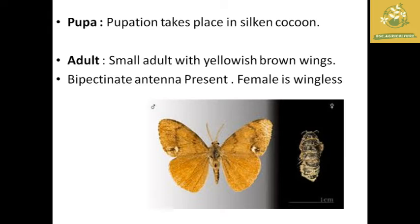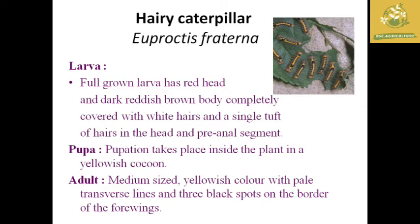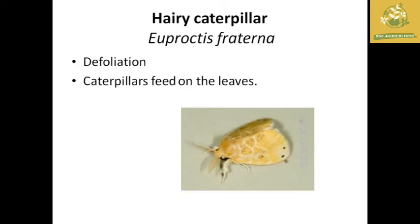The adult is a small yellowish moth with yellow-brown wings and a bipectinate antenna. The female is wingless. The fully grown larvae have a reddish-colored head and dark reddish-brown body, with tufts of hairs and pre-anal segments. In the final segment, there is a yellowish moth — medium-sized, yellow-colored, with three black spots on four wings and two large black spots. This causes defoliation.